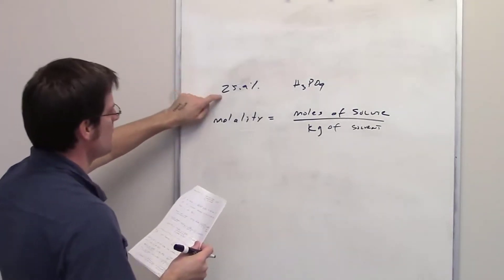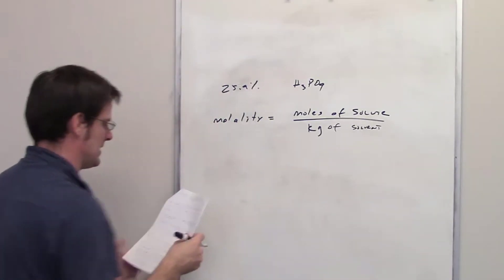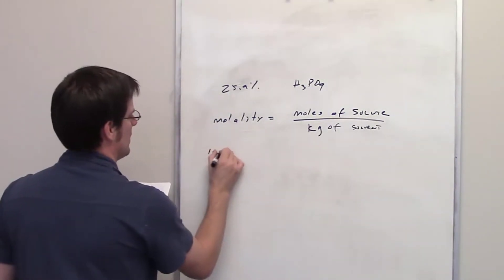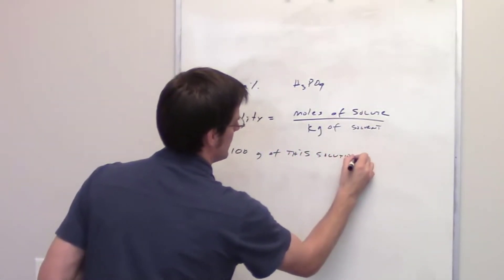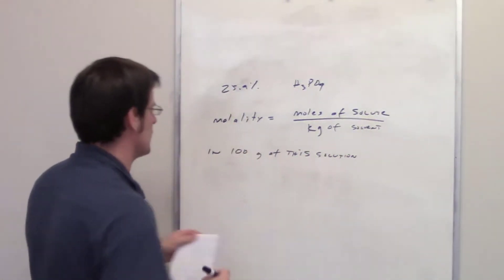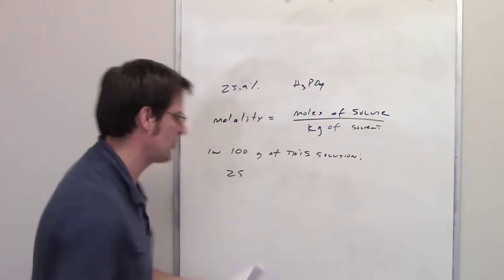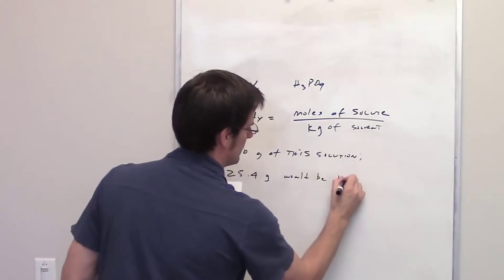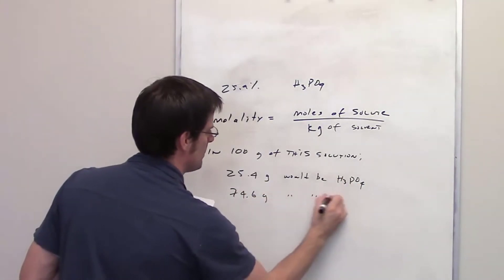So we're told once again that the solution is 25.4% phosphoric acid by mass. What that means then is that if I took 100 grams of this solution, 25.4 grams, so I'll write down in 100 grams of this solution. And by the way, the solvent in this case is presumably going to be water. That's usually the solvent we use for these strong acids. So if I had 100 grams of this solution, logically, because it's 25.4% phosphoric acid by mass, 25.4 grams would be phosphoric acid. And then whatever is left, which is 74.6 grams, would be water.